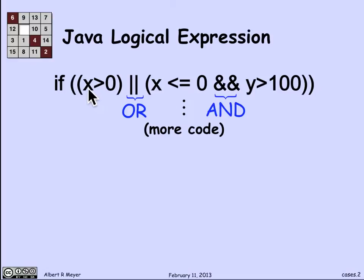Let's read the test. If x is greater than 0 or if x is less than or equal to 0 and y is greater than 100, go ahead and do the code that's in there indicated by the vertical dots. We're going to assume here that x and y are variables that are declared to be of type floating point or real number or integers for that matter.